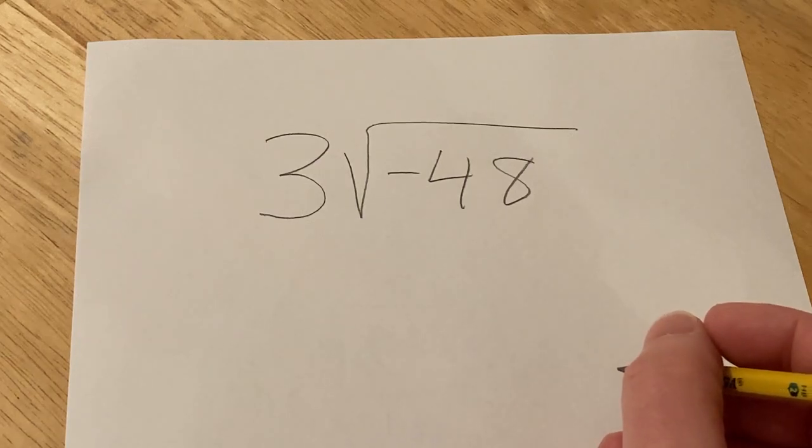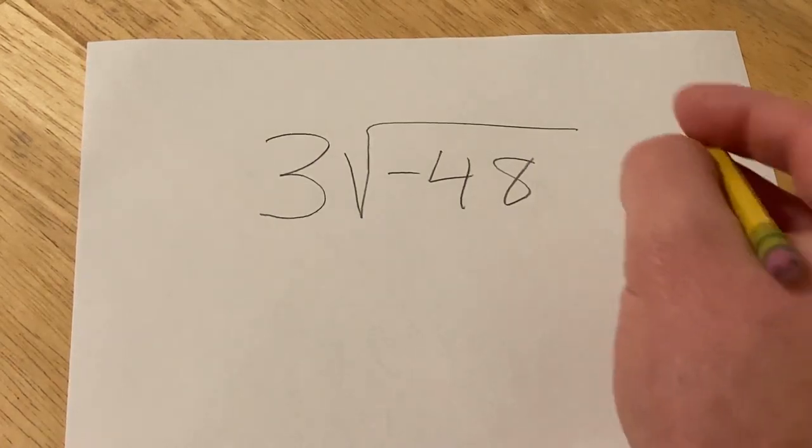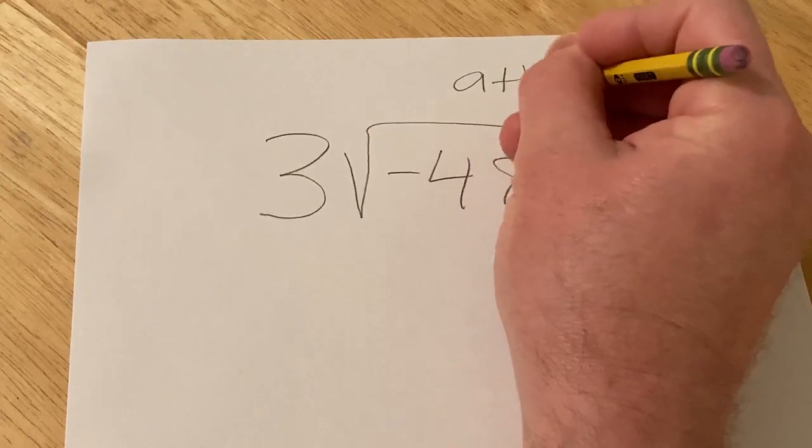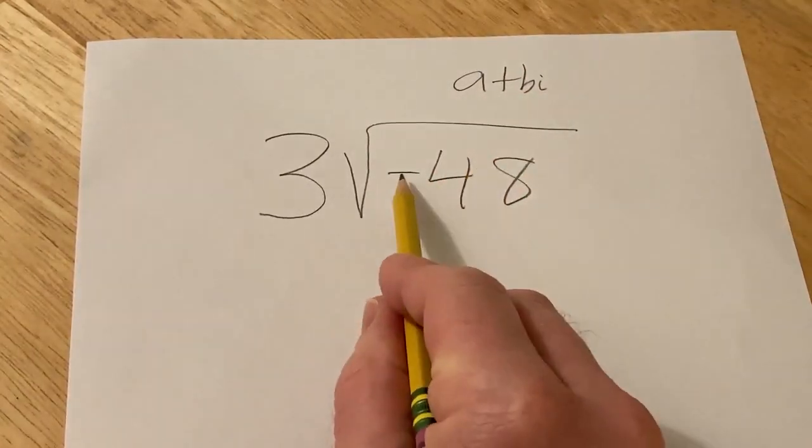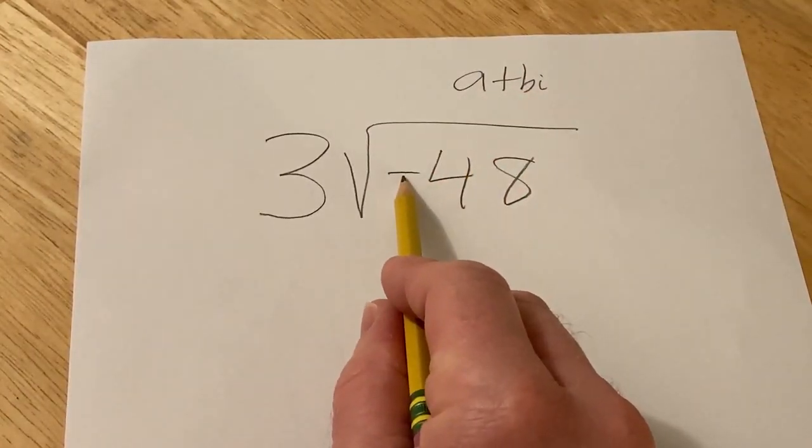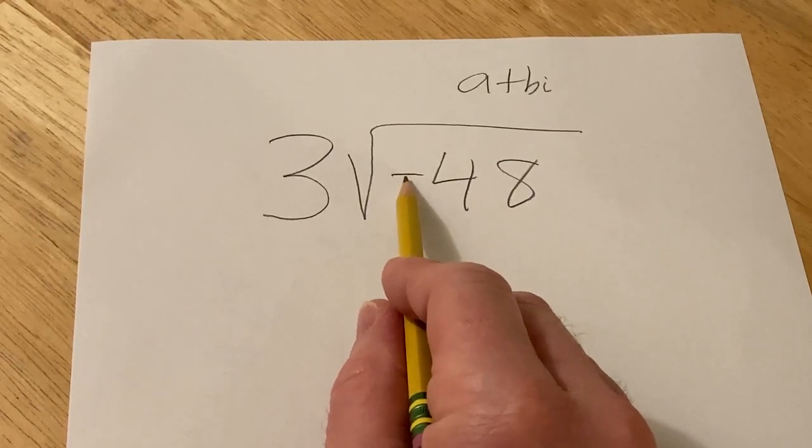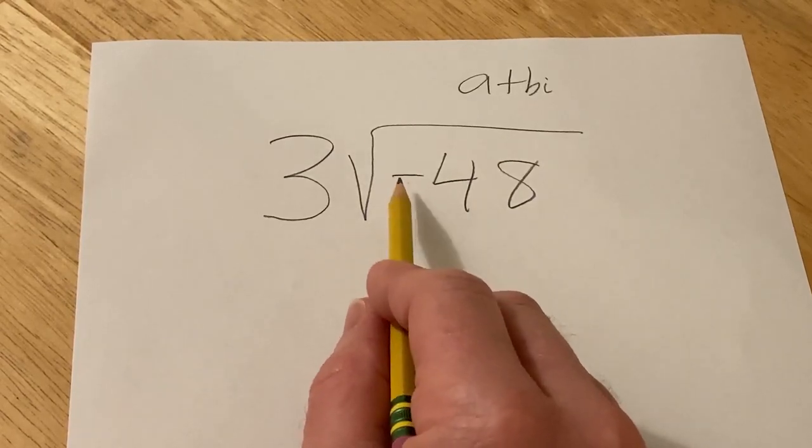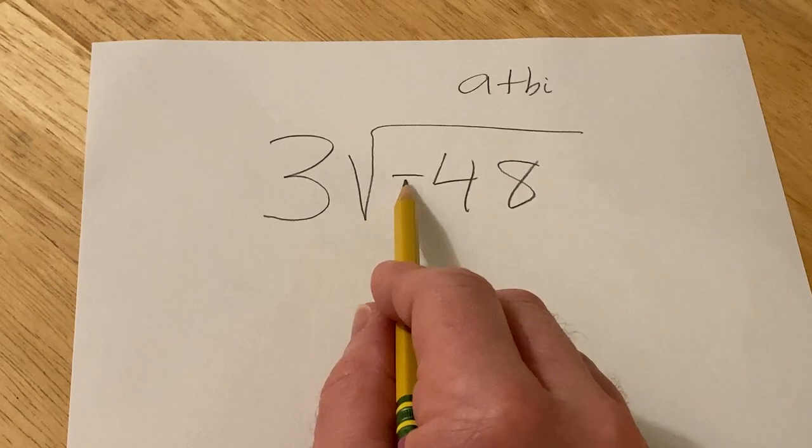Hi, in this problem we're going to simplify this expression and the directions want us to write it in the form a plus bi. So basically we need to get rid of this negative that's in the square root. So the first thing you want to do in these problems when you have a negative in the square root like this is turn it into an i.